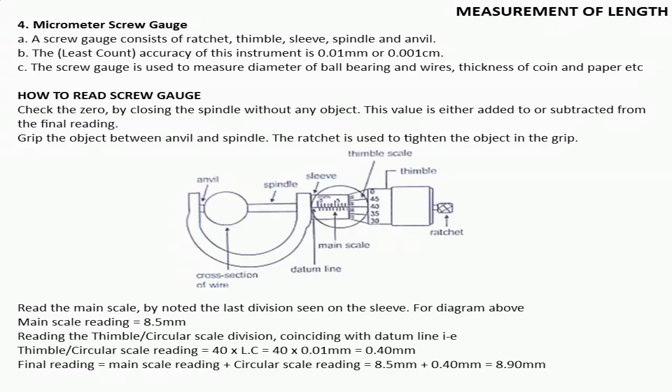Now to take the final reading, the final reading is equal to main scale reading plus circular scale reading. In our case, the main scale reading is 8.5 millimeter and the circular scale reading is 0.40 millimeter. When we add it, we get 8.90 millimeter of that small wire or anything. So this is the whole method to find out the reading with the help of micrometer screw gauge.